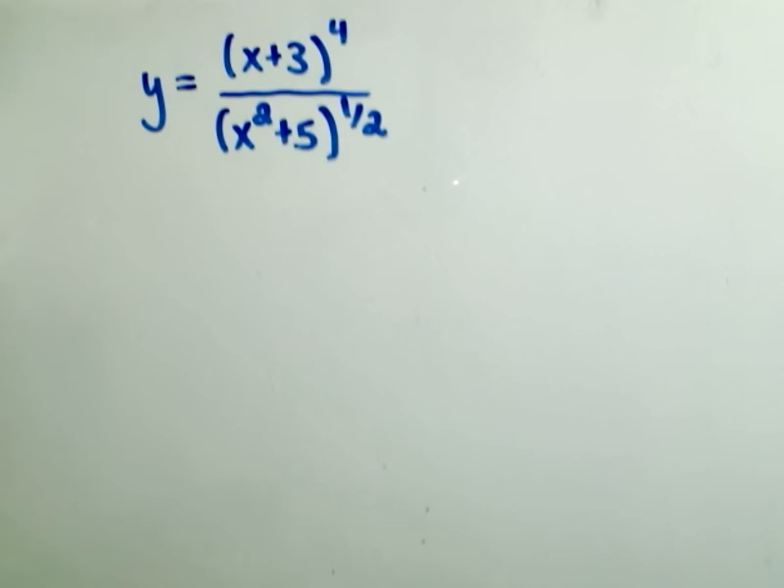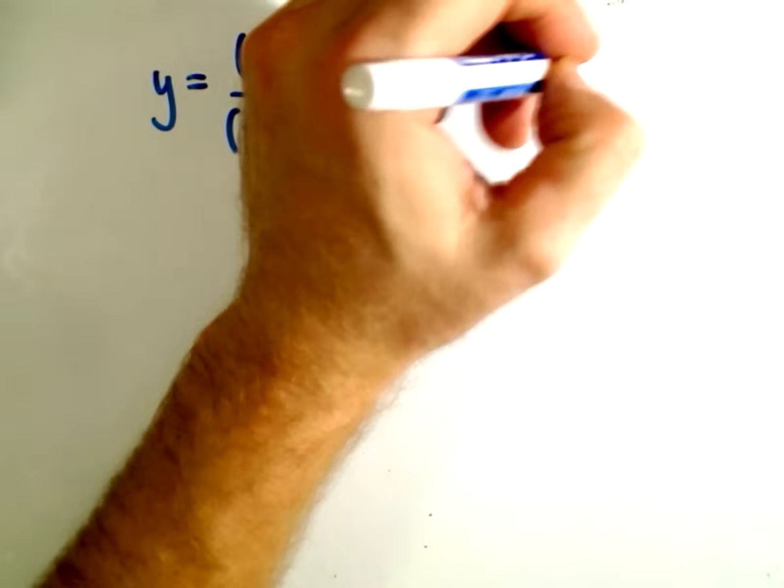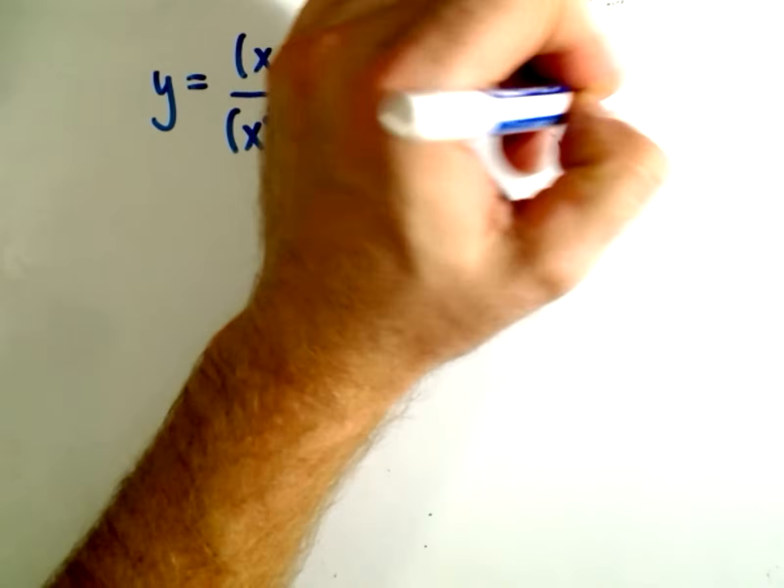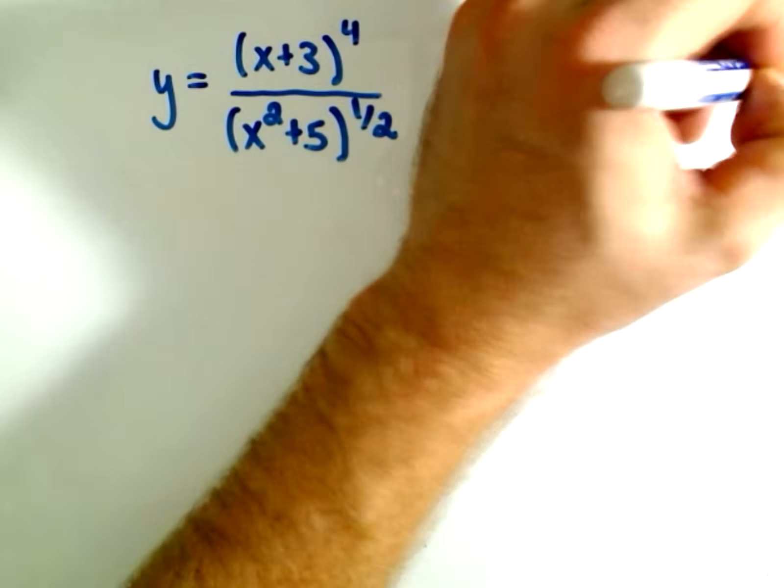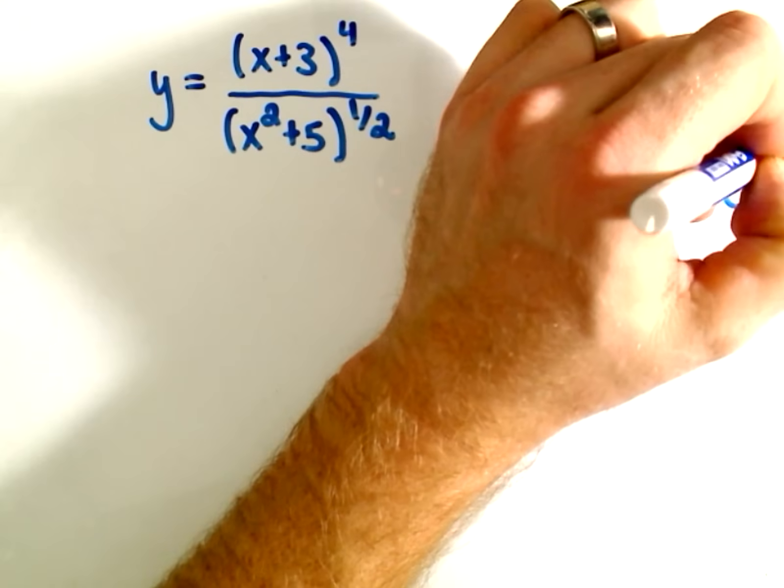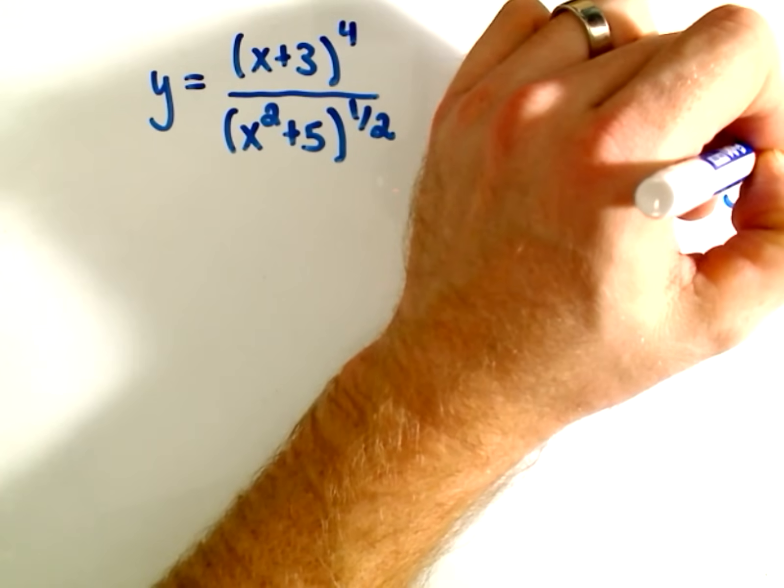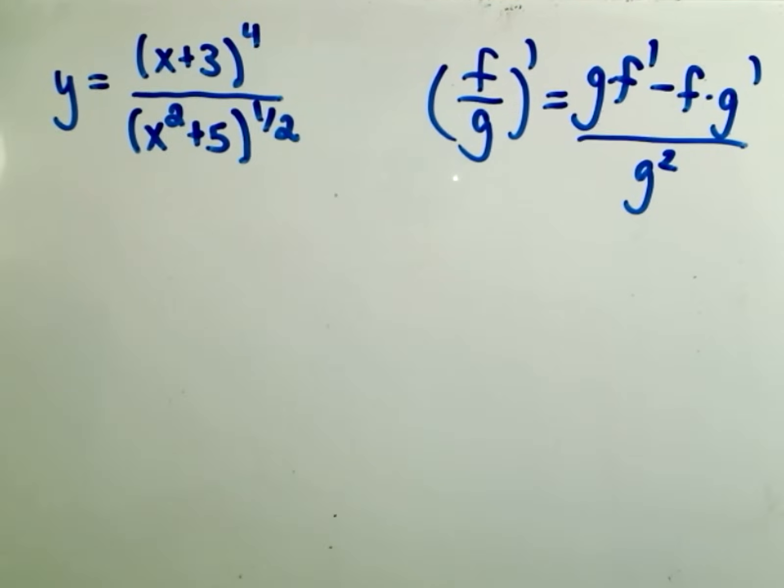So the first thing I would do is rewrite my square root as to the 1 half power, just because I'm going to use the chain rule. So remember the quotient rule says if you have a fraction, it says you get the bottom times the derivative of the top minus the top times the derivative of the bottom all over the bottom squared.